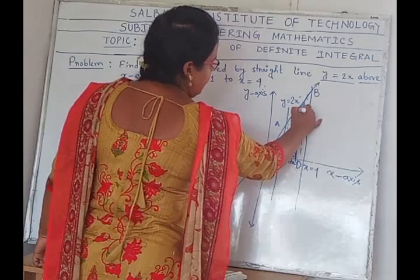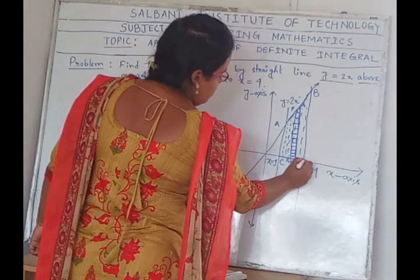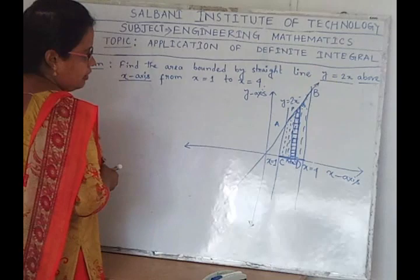P, Q always lies on the straight line y equals 2x, and R, S always lies on the x-axis.